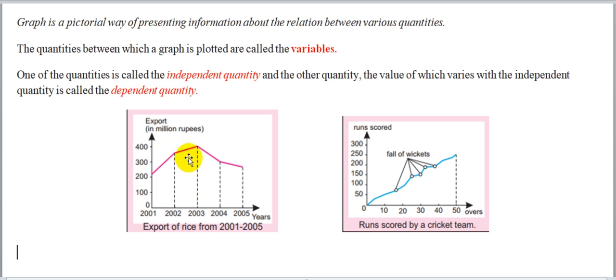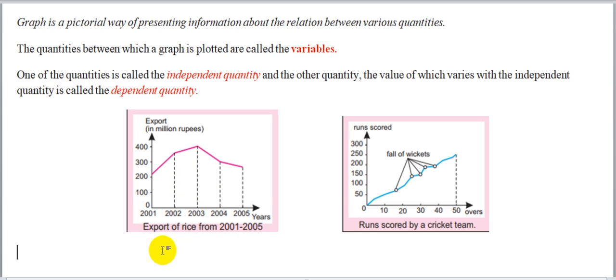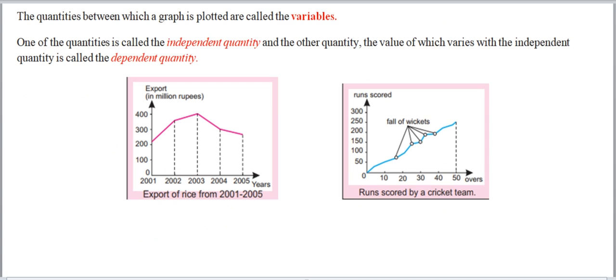ہمارے پاس different طرح کے graphs ہیں۔ کچھ کو bar کی مدد سے explain کرتے ہیں، کچھ کو dots کی مدد سے۔ مثلاً runs scored by a cricket team — ہر 10 overs میں کتنے runs gain کیے — ان quantities کو dot کی مدد سے represent کر کے ایک line سے ملا دیتے ہیں۔ یا export of rice from 2001 to 2005 کو bar graph سے represent کر سکتے ہیں۔